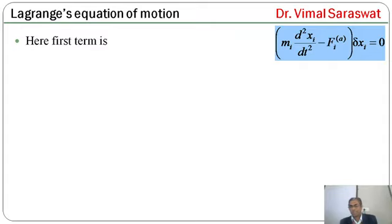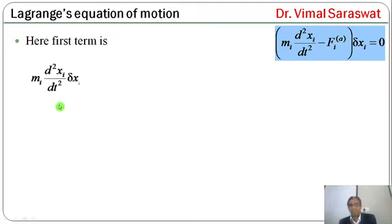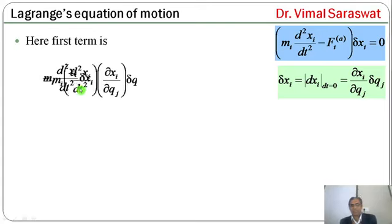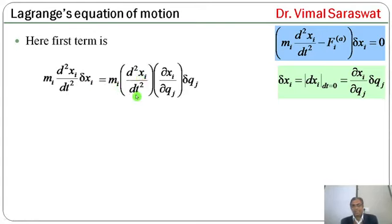The first term of D'Alembert's principle is mi * d²xi/dt² * δxi. Since δxi is the infinitesimal virtual displacement equal to (∂xi/∂qj) * δqj, substituting δxi into the first term gives: mi * d²xi/dt² * (∂xi/∂qj) * δqj.